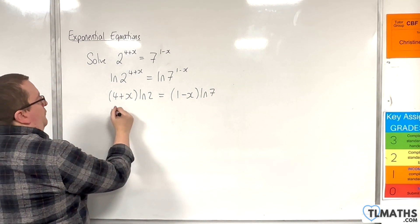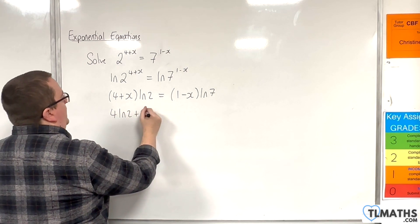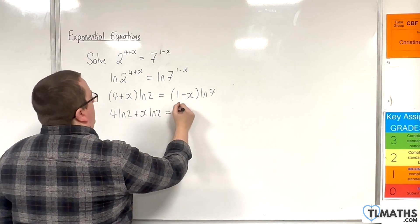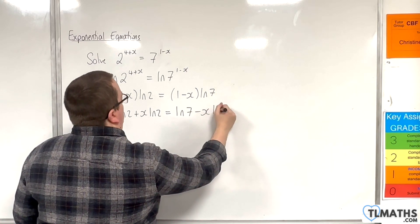Expand the brackets out now, so 4 natural log of 2 plus x natural log of 2 is equal to natural log of 7 take away x natural log of 7.